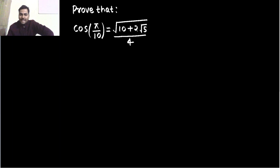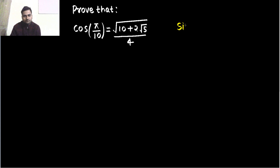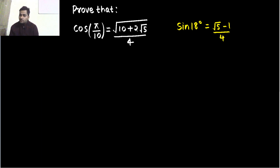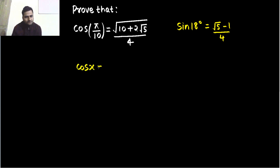We have already derived the value of sin 18 and I told you that this is an important result and you should learn it. The sin 18 degree value, if you remember, is under root 5 minus 1 divided by 4. So, can we use that value to find the value of cos 18? If you know sin, then how we find cos — cos x is this result you already know.